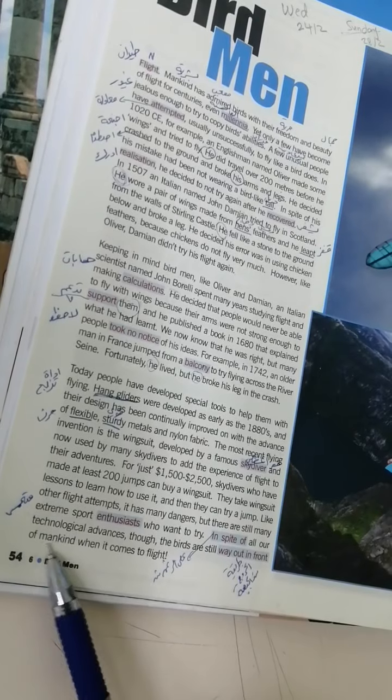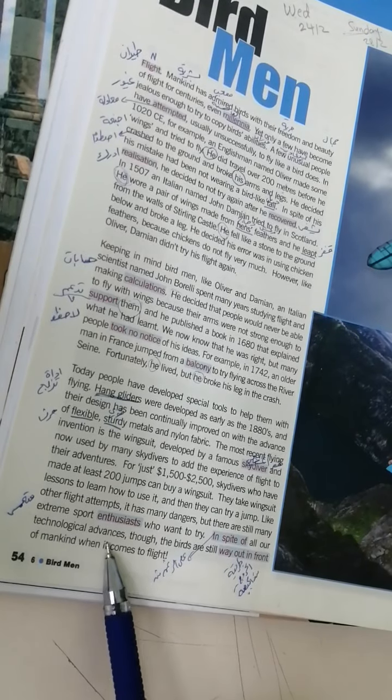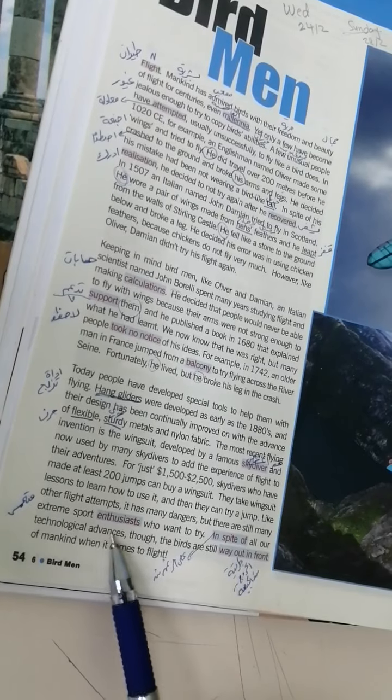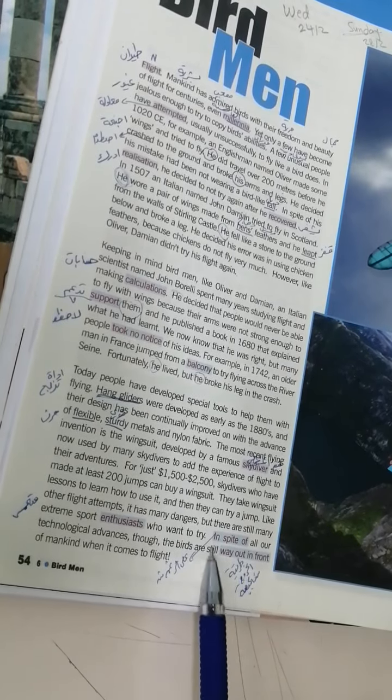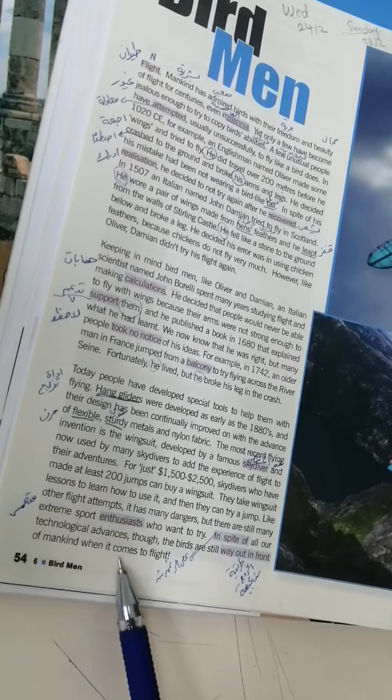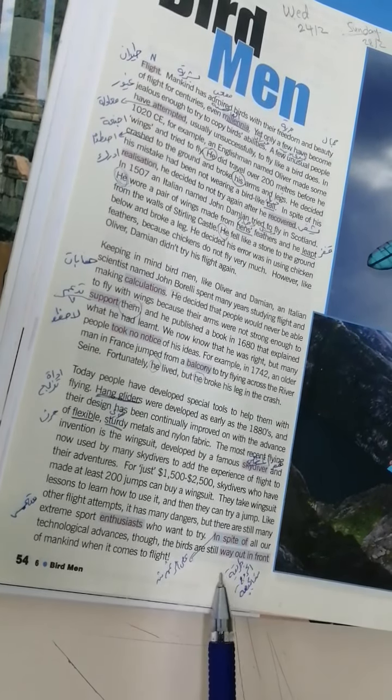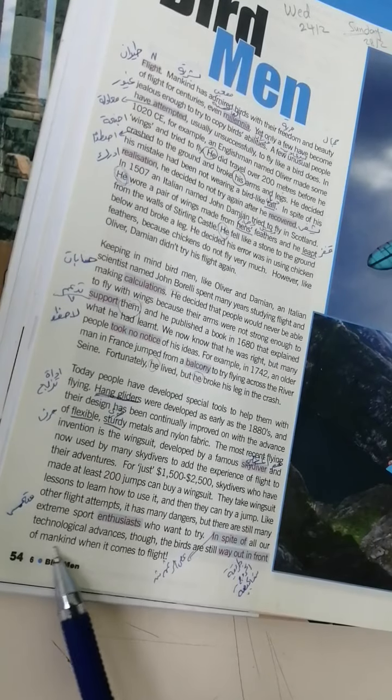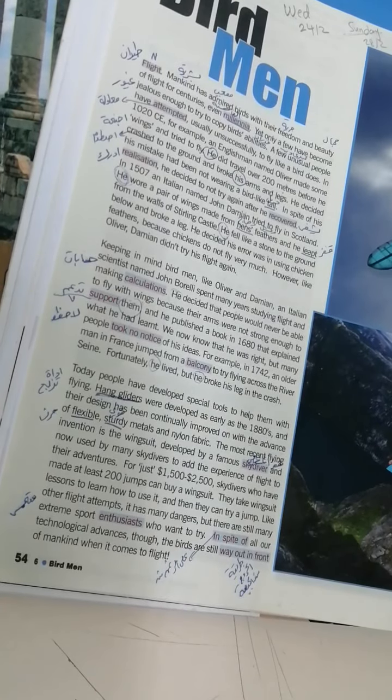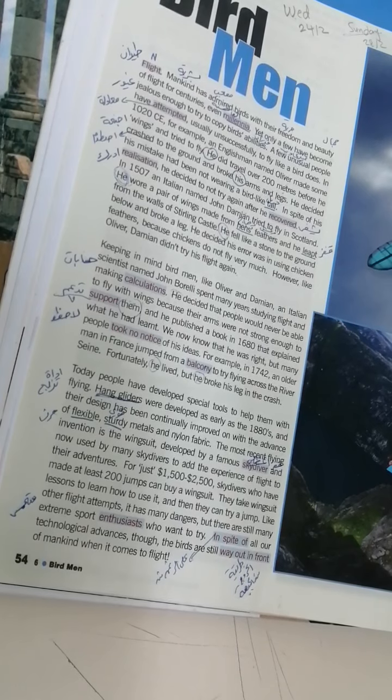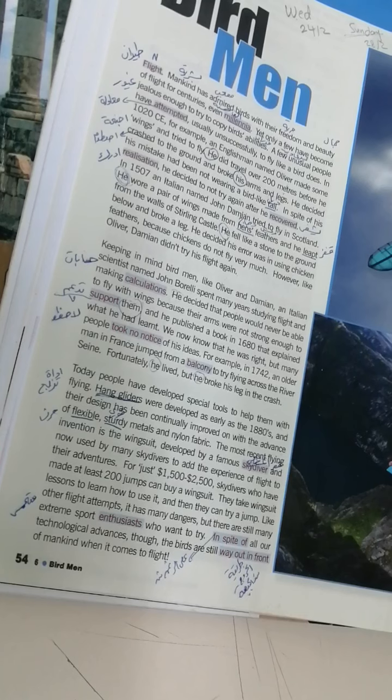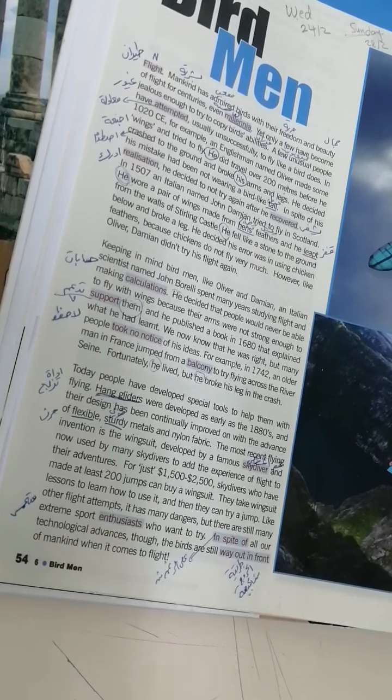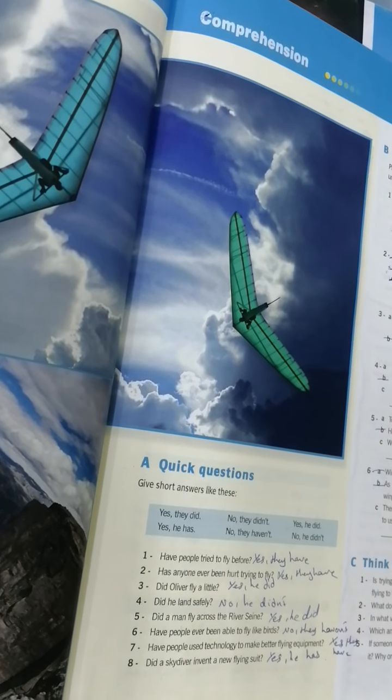In spite of all our technological advances انو على الرغم من كل التكنولوجيا المتطورة, the birds are still way out in front of mankind when it comes to flight. انو الطريقة اللي بيخرجوا فيها الطيور يعني يعني بتكون هي يعني احسن من البشرية لما تحاول انها الطير. Okay. Now let's move to page 55. Let's do these exercises.